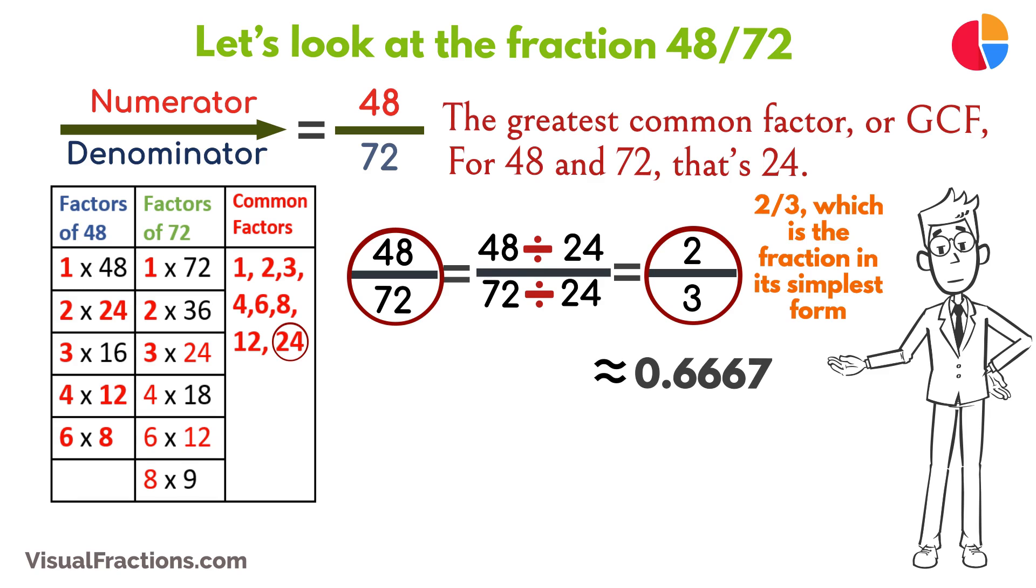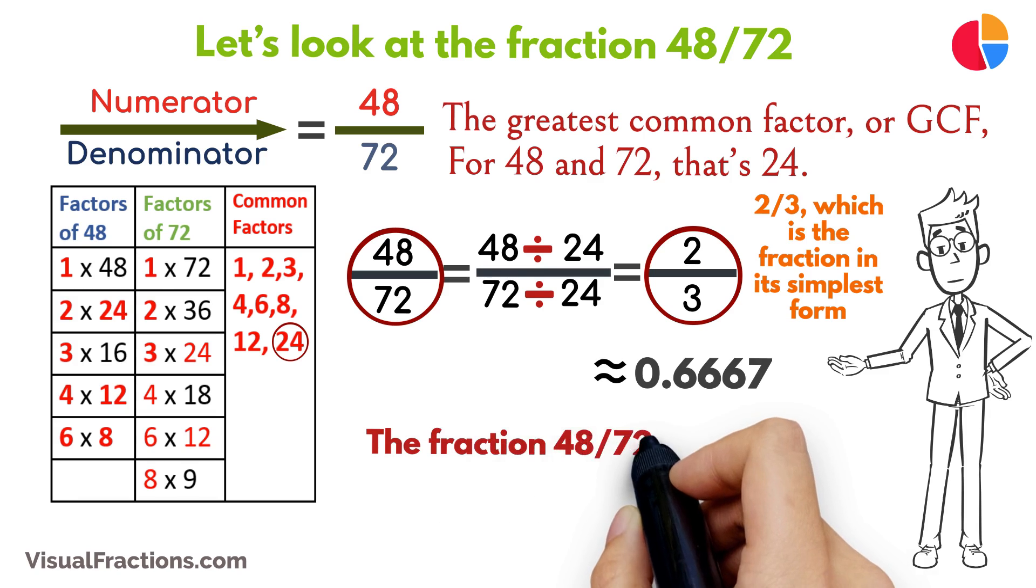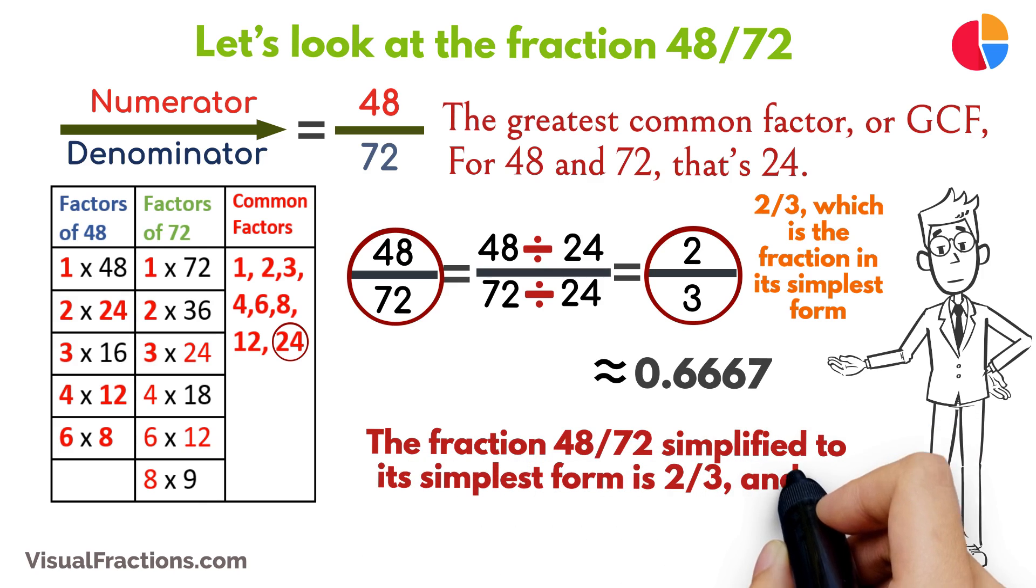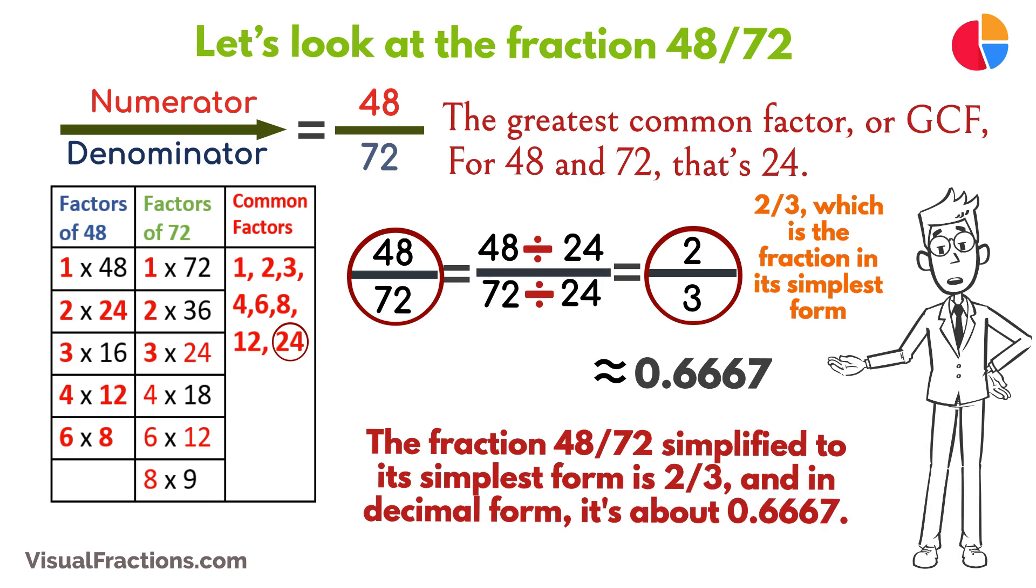So, there you have it. The fraction 48/72 simplified to its simplest form is 2/3, and in decimal form, it's about 0.6667.